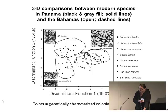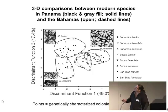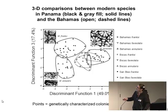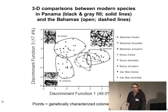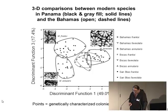We can do a discriminant analysis of the species in Panama and the species in the Bahamas. With the solid-line circles, these are the three classic species in Panama. But when you go to the Bahamas, you find a whole lot more species overlap. So again, the morphology is mimicking the genetics, and they confirm that hybridization is probably occurring in the Bahamas.